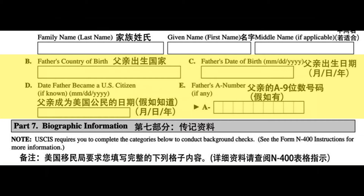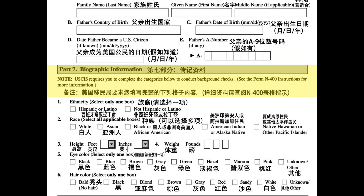你的美国公民的父亲当前的法定姓名。姓，名，中间名，若有。父亲出生的国家。C. 父亲生日，月日年。D. 父亲成为美国公民的时间，假如知道，月日年。D. 父亲的A-9位数号码，假如有。